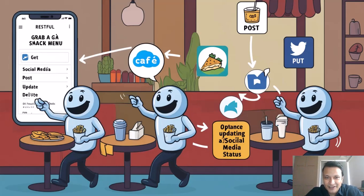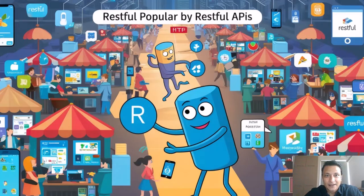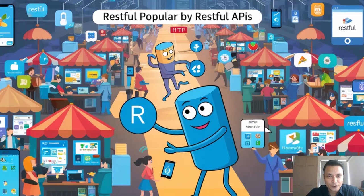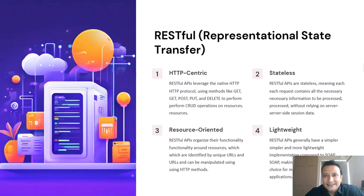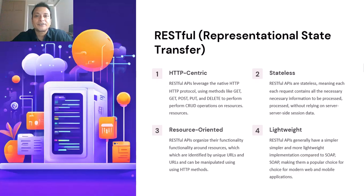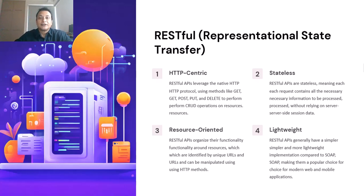No wonder she is so popular in the world of web and mobile apps. From the technical side, RESTful APIs are designed around the principles of REST, an architectural style that leverages the HTTP protocol. RESTful APIs are stateless, meaning each request from a client contains all the information the server needs to fulfill that request. This design allows RESTful services to scale easily and handle multiple clients simultaneously. Resources in REST are identified by URLs, and operations are performed using standard HTTP methods.